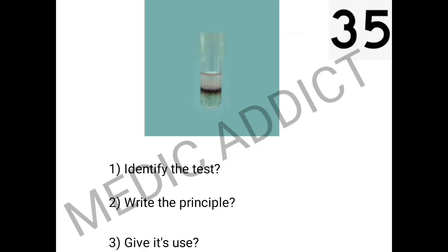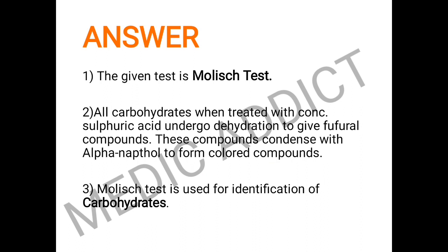Continuing with the 35th spot: we have to identify the test, write its principle, and state its use. In the given test tube there is a clean classical violet color, which is the identifying point. This test is the Molisch test.